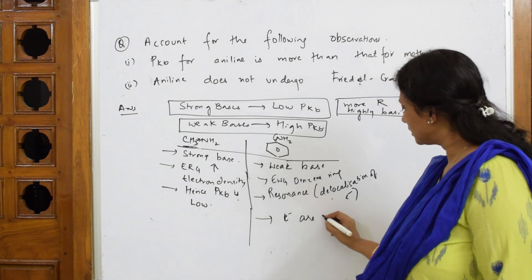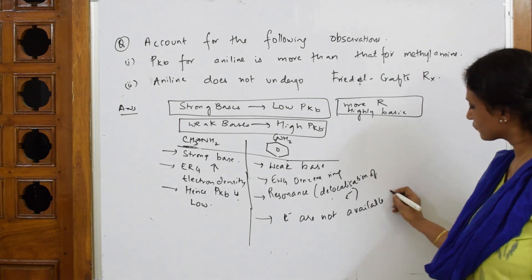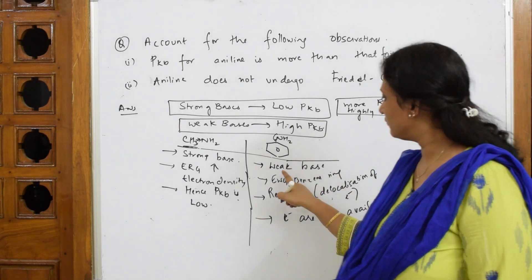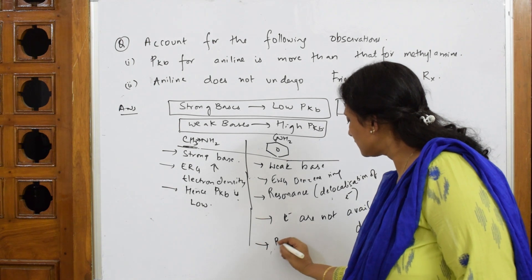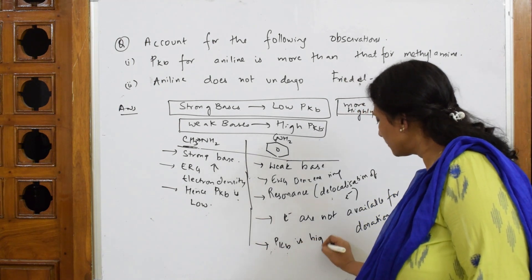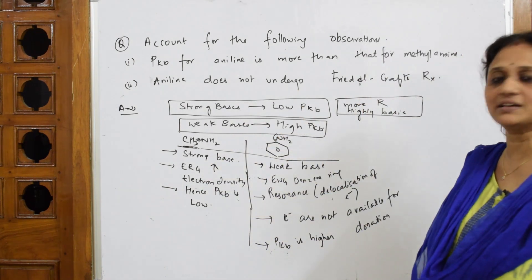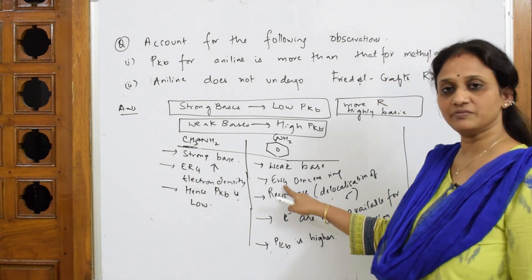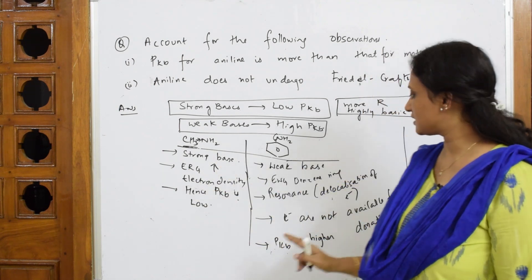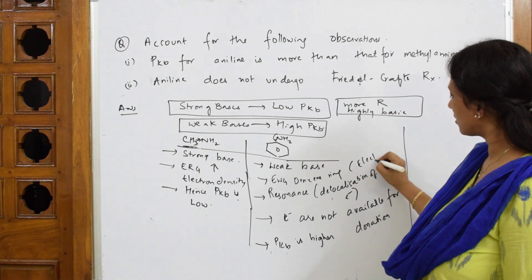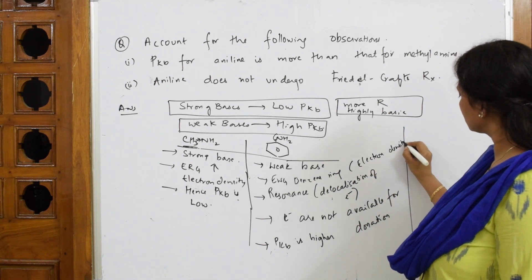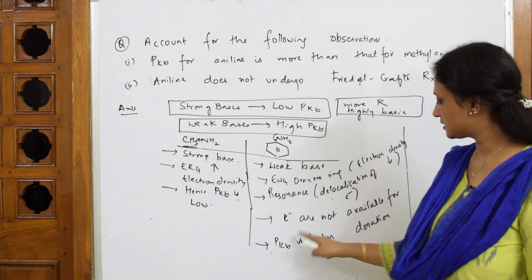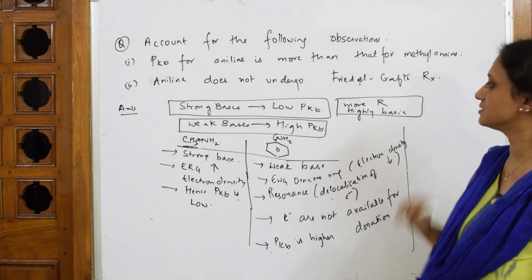Because of this delocalization, electrons are not available for nitrogen to donate. When electrons are not available for donation, it is automatically a weak base. When it is weak, pKb is higher. Compare: strong base — electron density increases — pKb low; weak base — electron density decreases — pKb high. That is your answer.